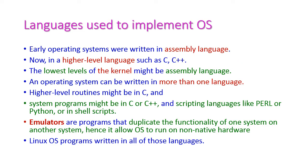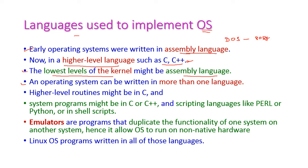Let us see the languages used to implement the operating system. In earlier days, systems were developed using assembly language — for example, the DOS operating system was implemented in assembly language for the 8088 processor. After that, high-level languages like C and C++ were adopted. The lowest level of the kernel is designed in assembly language while all other functionalities are developed using higher-level languages. Hence an operating system can be written in more than one language.